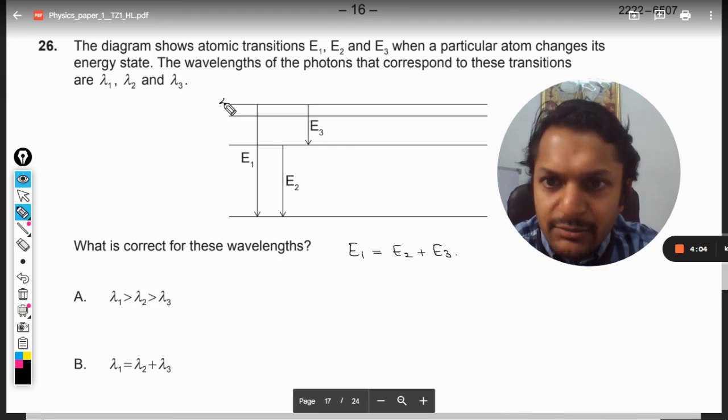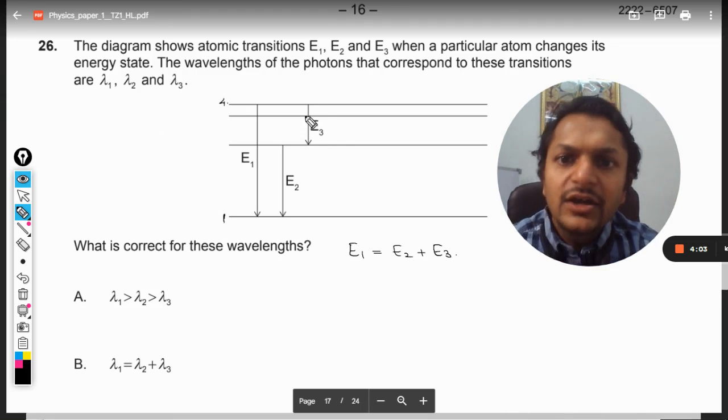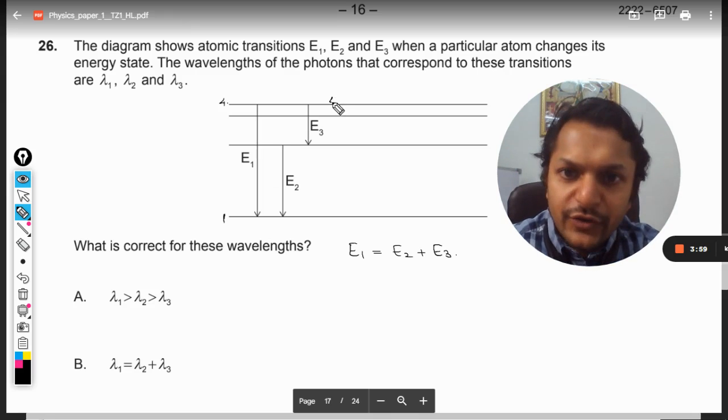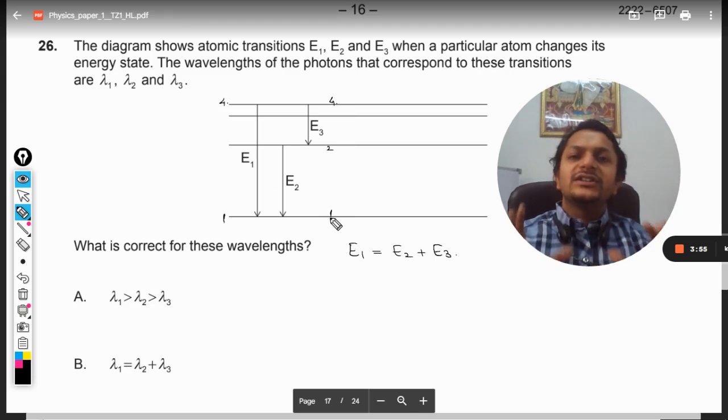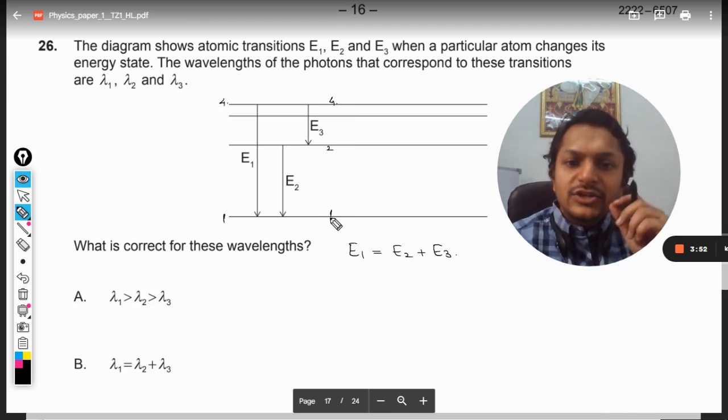Either it jumps from, let us say, shell number 4 to shell number 1 directly, or it jumps from 4 to 2 and then from 2 to 1. Even then, the total energy emitted will be the same. So E1 is equal to E2 plus E3.